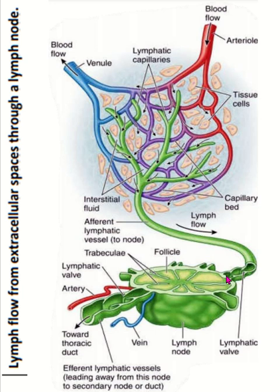Lymph enters within the lymph node. This is the capsule of the lymph node. Under the capsule, this is the subcapsular sinus. Lymph enters within the subcapsular sinus. This is the trabecular sinus — then it enters the trabecular sinus — then the medullary sinus, and it seeps through the different lymph vessels and drains into the venous system.